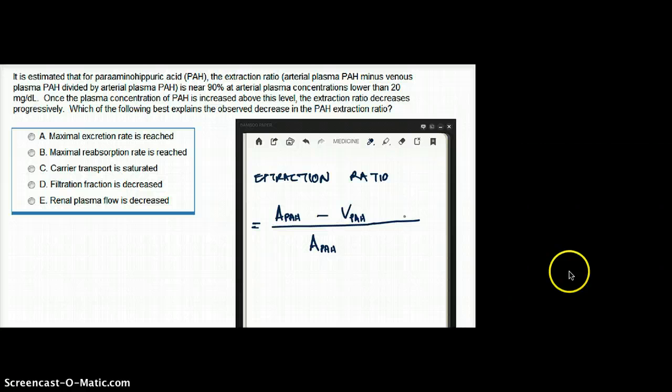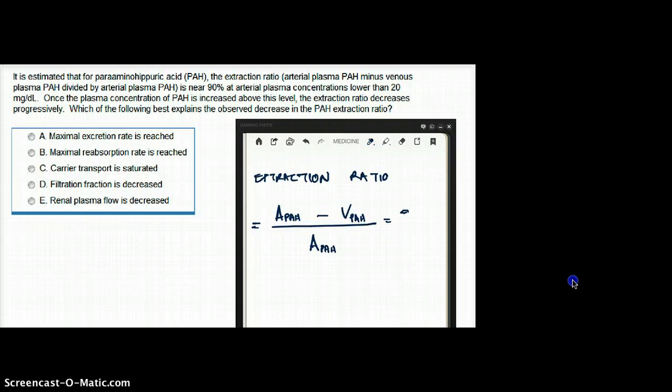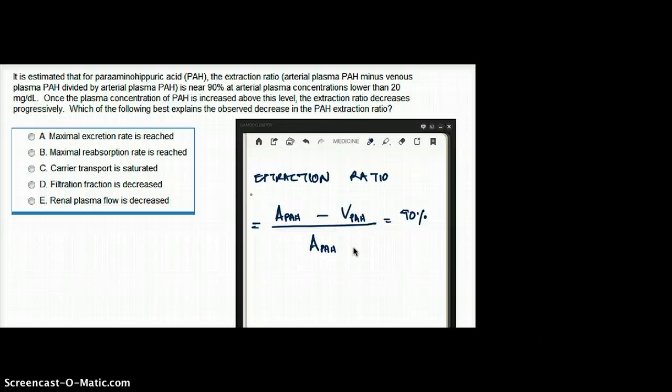Is near 90%. So they even told us what their value is equal to. So this is near 90%. At an arterial concentration lower than 20 mg per deciliter. So they're saying that the extraction ratio of PAH is 90% when the concentration of PAH in the plasma is lower than 20 mg per deciliter.